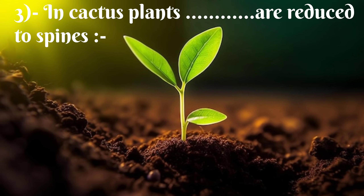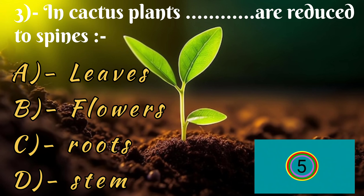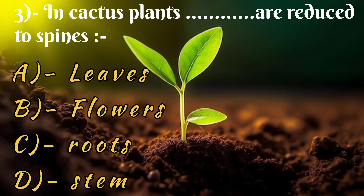Question number three: in cactus plants, blanks are reduced to spines. Option A is leaves, option B is flowers, option C is roots, and option D is stem. The correct answer is option A — leaves.